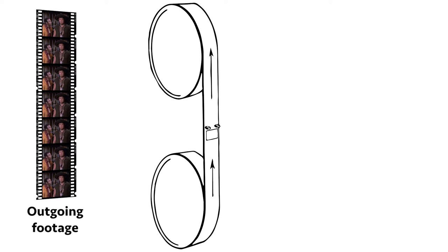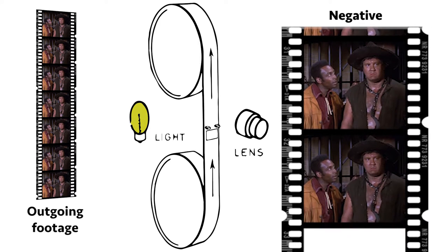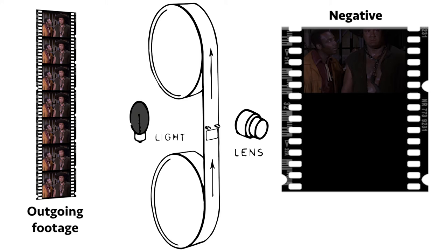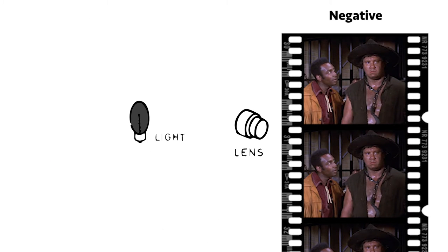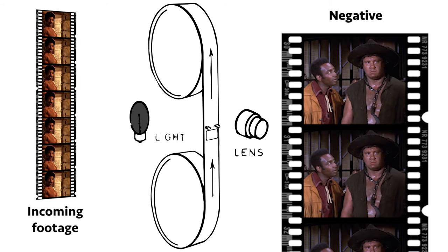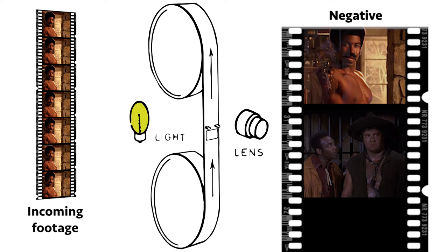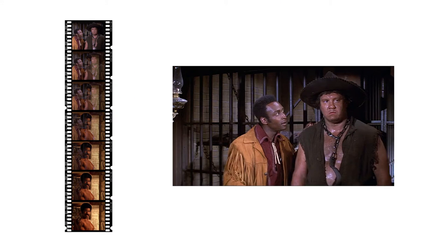The lab tech would first load the master positive of the outgoing shot into the printer. This is then run and copied onto the negative. As it's copied, the camera's shutter is gradually closed the number of predetermined frames per the editor's worksheet instructions until it is fully closed. The first patch, which is essentially a fade out, is recorded. The negative is then rewound to the dissolve start mark. Now with the shutter still fully closed, the outgoing shot is then replaced with the incoming shot. The projector is started again — this time the shutter slowly opens frame by frame and records a fade in onto the same negative. Once the shutter is fully opened, the recording stops and the negative now contains the final dissolve effect.